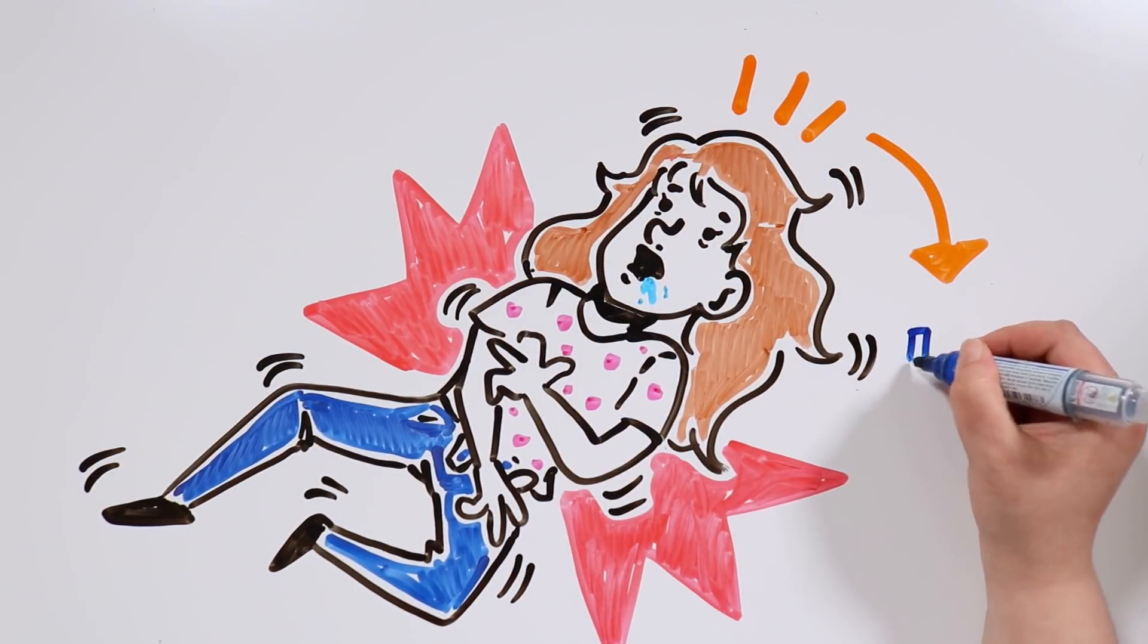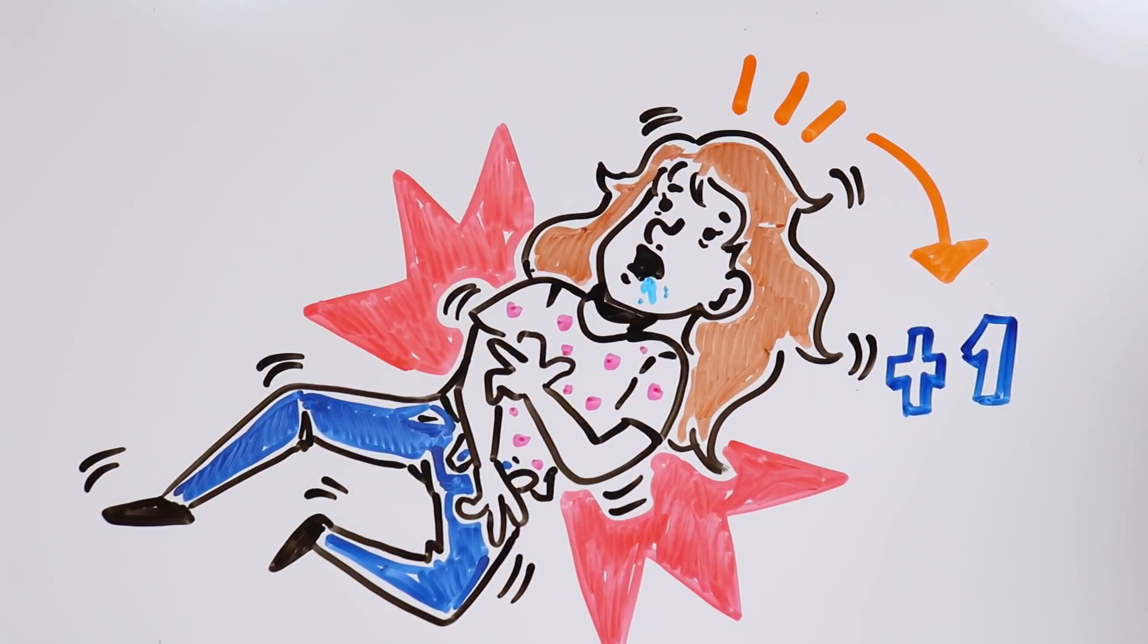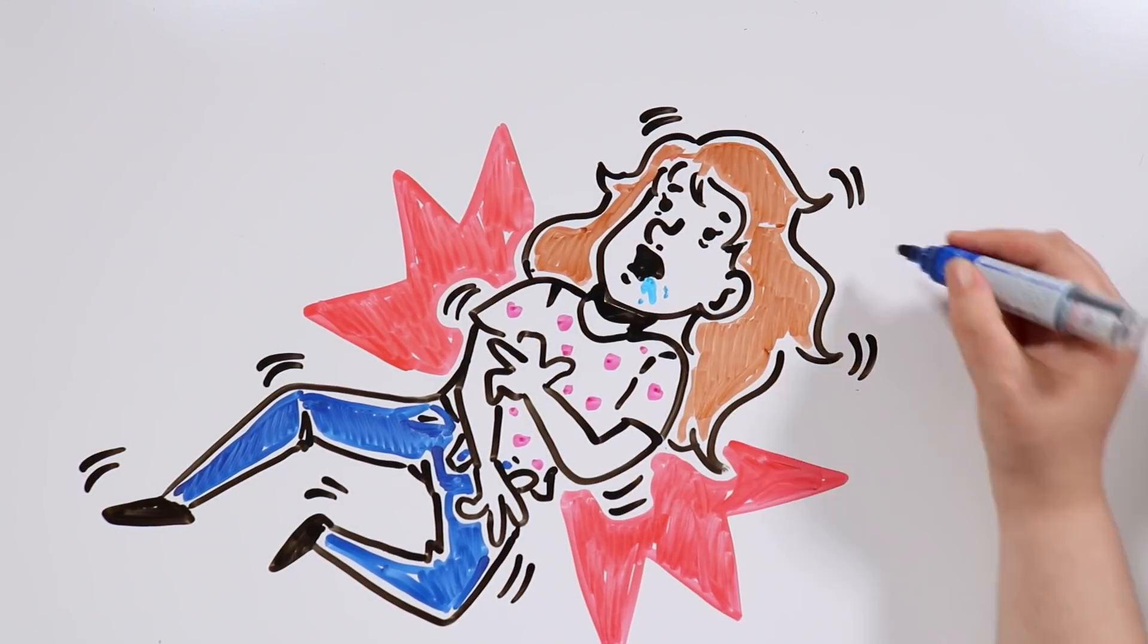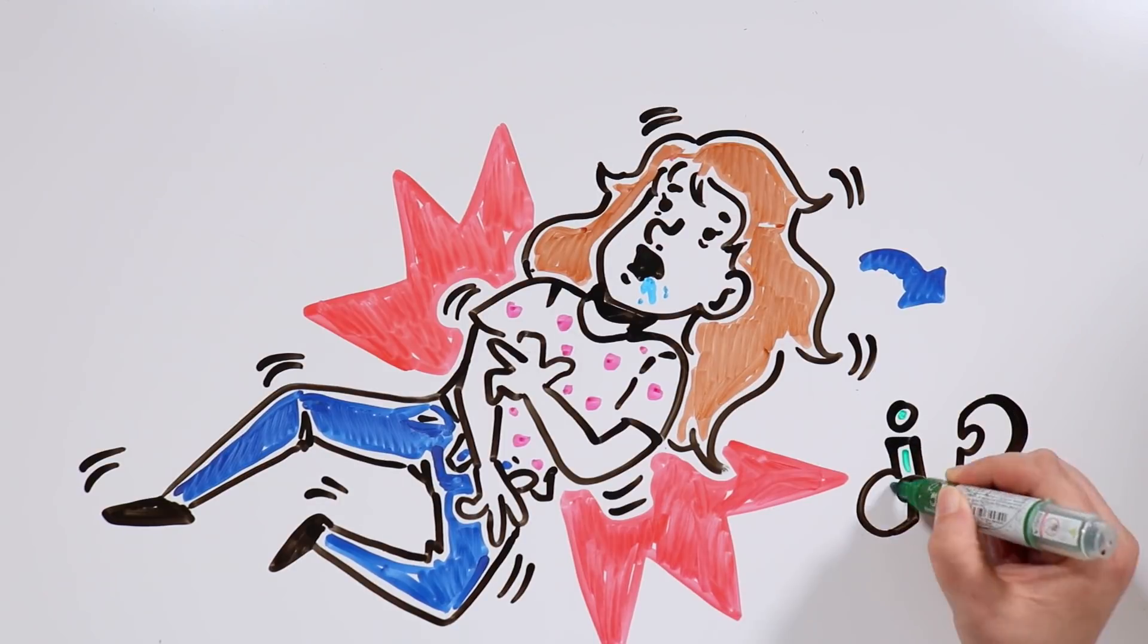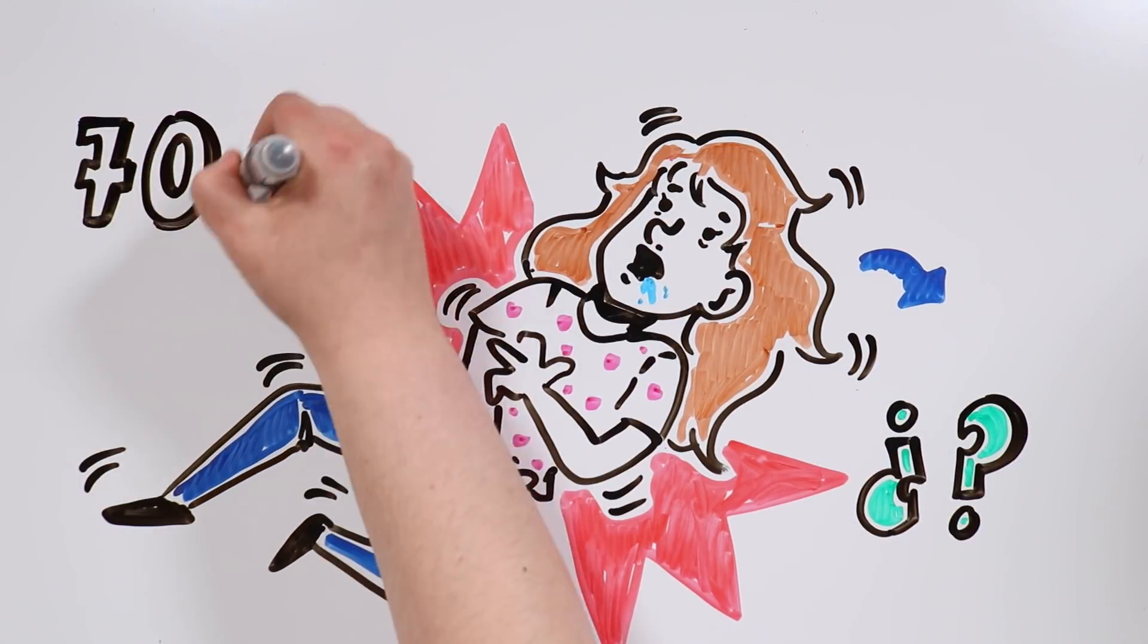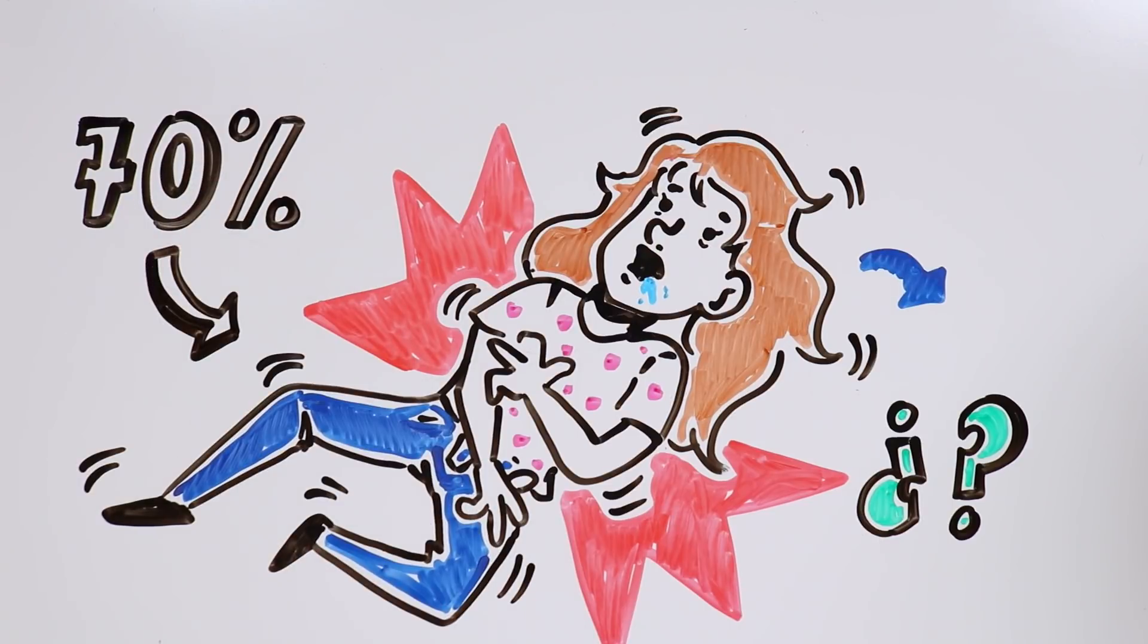For someone to be diagnosed with epilepsy, the person has to have had more than one epileptic attack during their life. And the causes of this disorder are not always known. In fact, in more than 70% of cases, the specialist cannot identify what produces it.